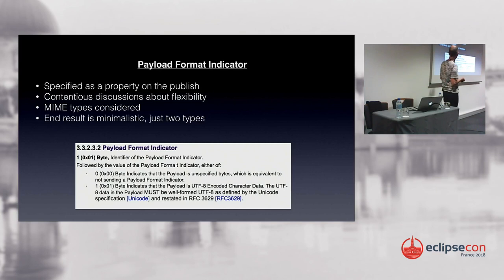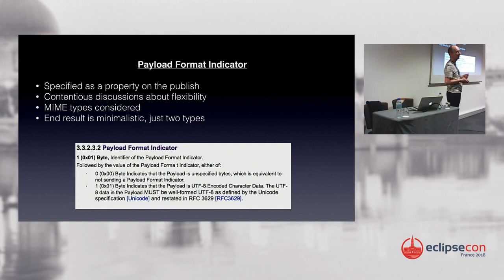We have a payload format indicator property with just two values: zero for bytes and one for UTF-8 strings. In the committee we discussed a whole raft of options including MIME types, but this was the lowest common denominator we ended up with. I can see we might have some minor additions to the specification in forthcoming years when people decide they want more options.